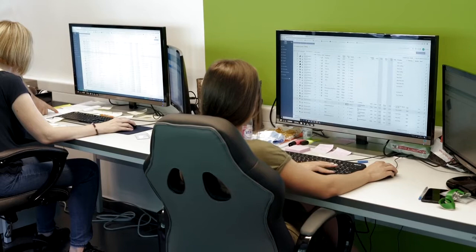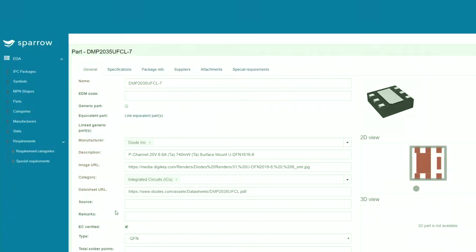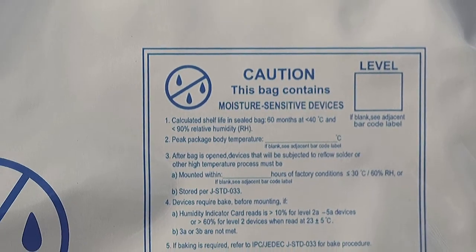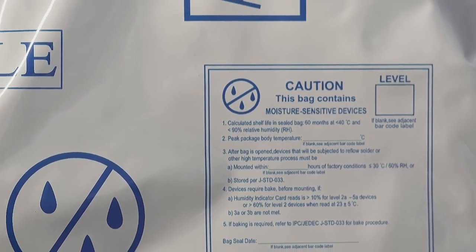Our engineers check the data sheet of these parts and check if they are washable. If there are non-washable components on a board we skip this step for the order.